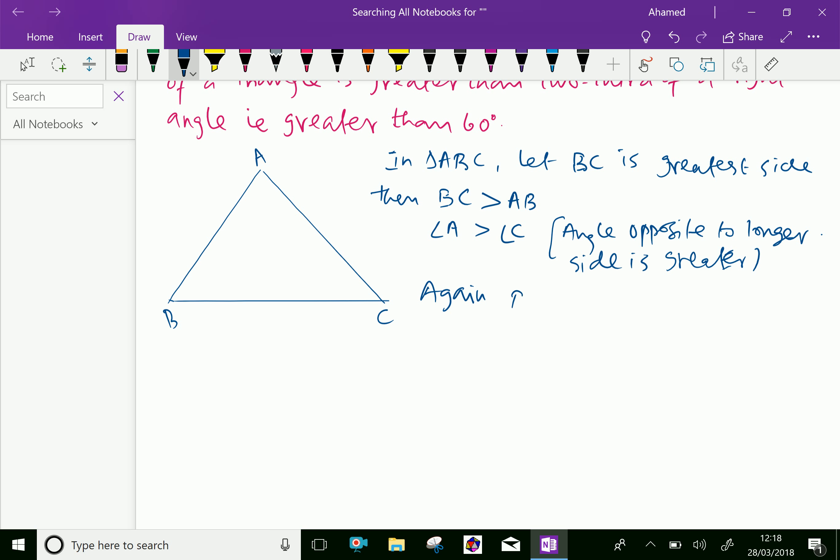BC is greater than AC also, because BC is the greatest. Therefore, you can say angle A is greater than angle B.